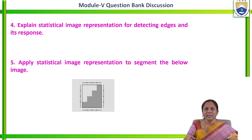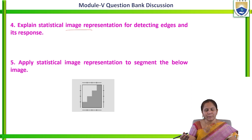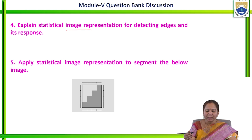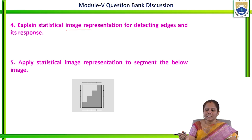The next question is: explain statistical image representation for detecting edges and its response. To answer this, we must first compute the image gradient, then analyze the gradient statistics, select an appropriate threshold, and perform post-processing steps in order to detect the edges.